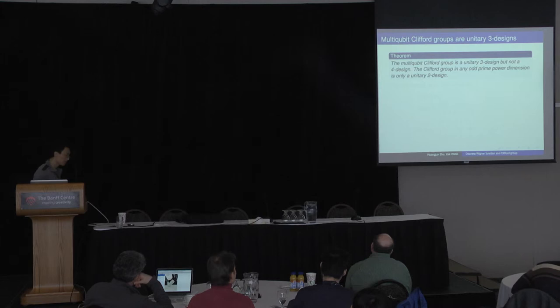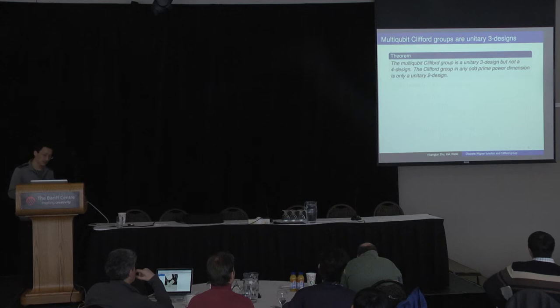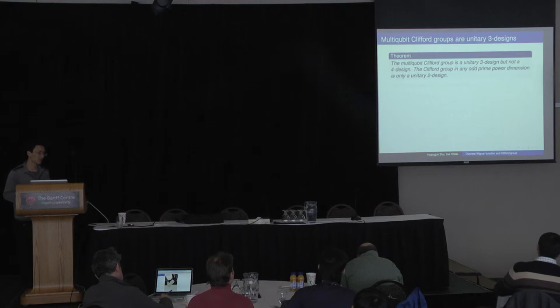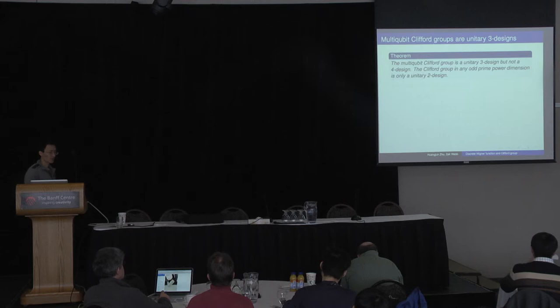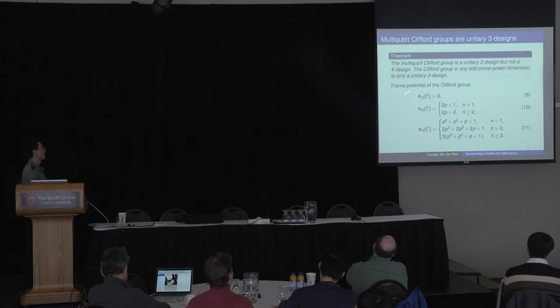Now I come to the connection between 3-design and the non-existence of discrete Wigner function in even prime-power dimensions. Basically, the multi-qubit Clifford group is a unitary 3-design, but the one in odd prime-power dimension is only a 2-design, not a 3-design. This was proved by me and also by Zak-Webb independently. My proof was mainly based on representation theory and also on the frame potential. One way to prove this is to just compute the frame potential directly, and then compare it with the minimum previously mentioned to obtain the result.